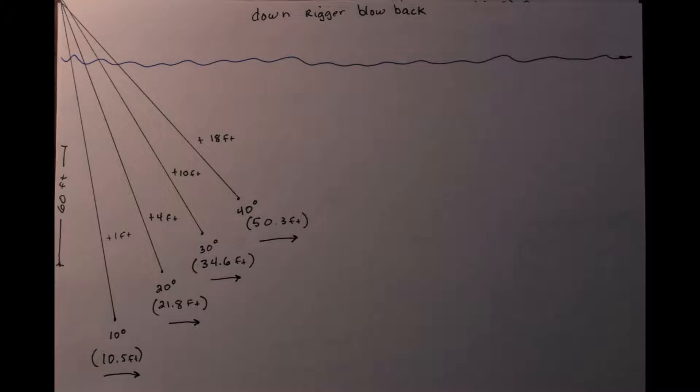And then it also shows you that to get 60 feet at a 40 degree cable angle, you almost have to have 78 feet of cable out because to make up for the amount of blowback, to get that ball down to 60 feet, you have to add a lot. But most of us run our ball depth off of our depth finder, not our cable number on the machine. But it's something, if you don't do that, it's something to think about.